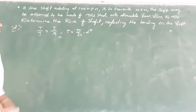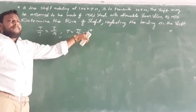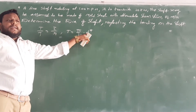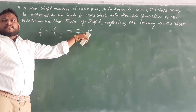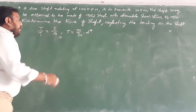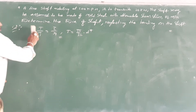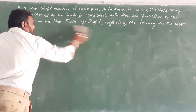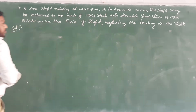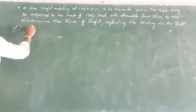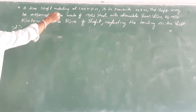Now we find D. We write the given data: speed N is 200 RPM, and then we proceed to find the result.